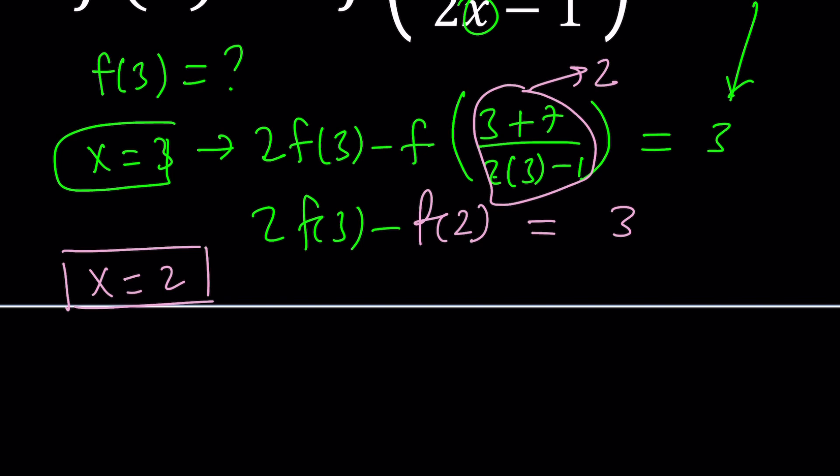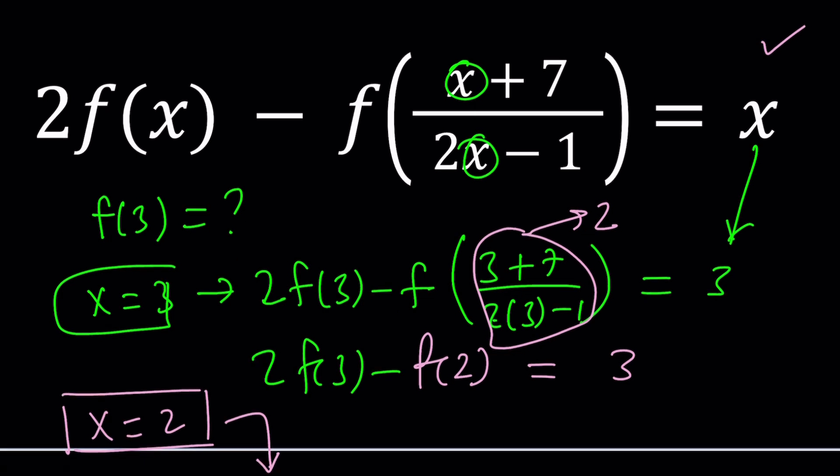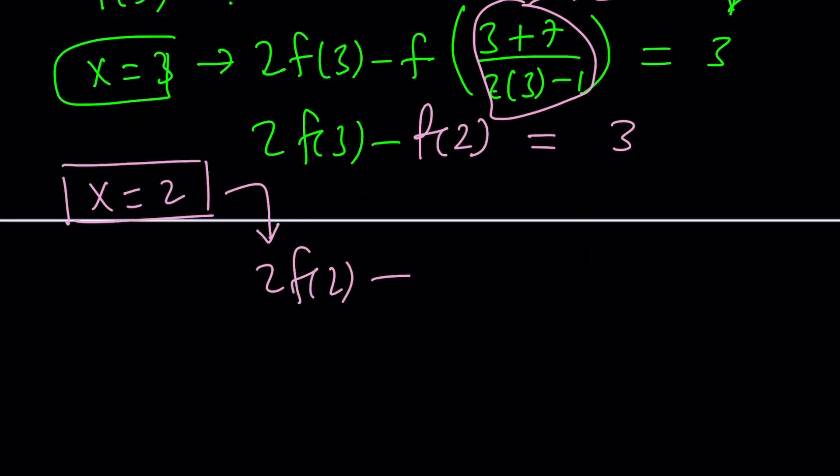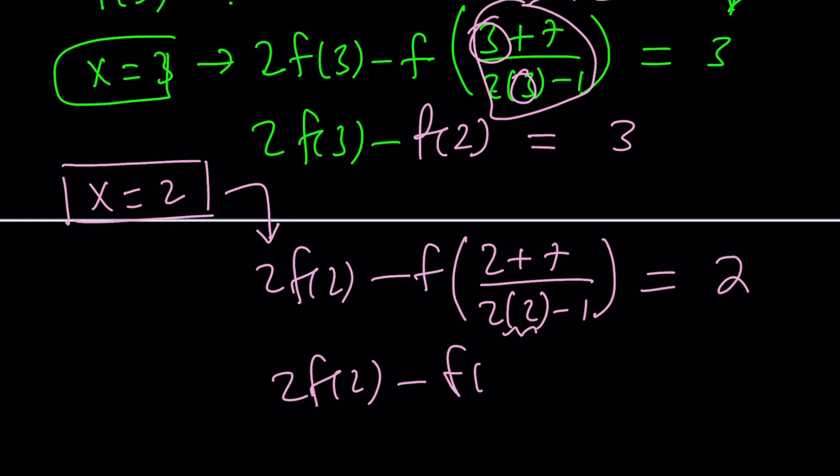Now, when you replace x with 2, on the left-hand side, first you get 2 times f of 2 minus f of... instead of 3, you're going to replace x with 2. It's going to be like 2 plus 7 divided by 2 times 2 minus 1. And that's equal to 2, of course, because that's x. Now, 2 plus 7 is 9. This is 4 minus 1 equals 3. 9 divided by 3 equals 3. How nice.